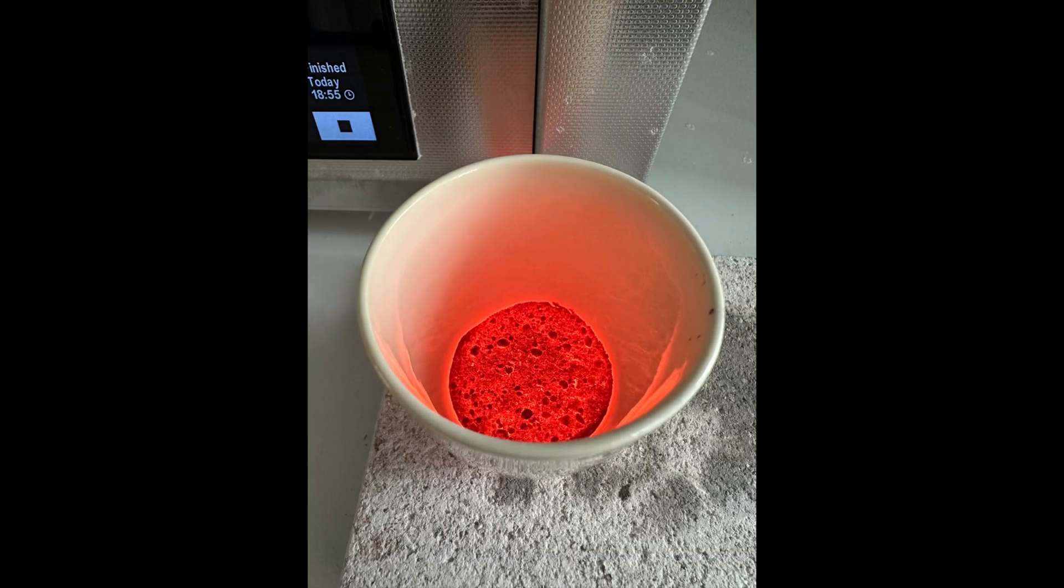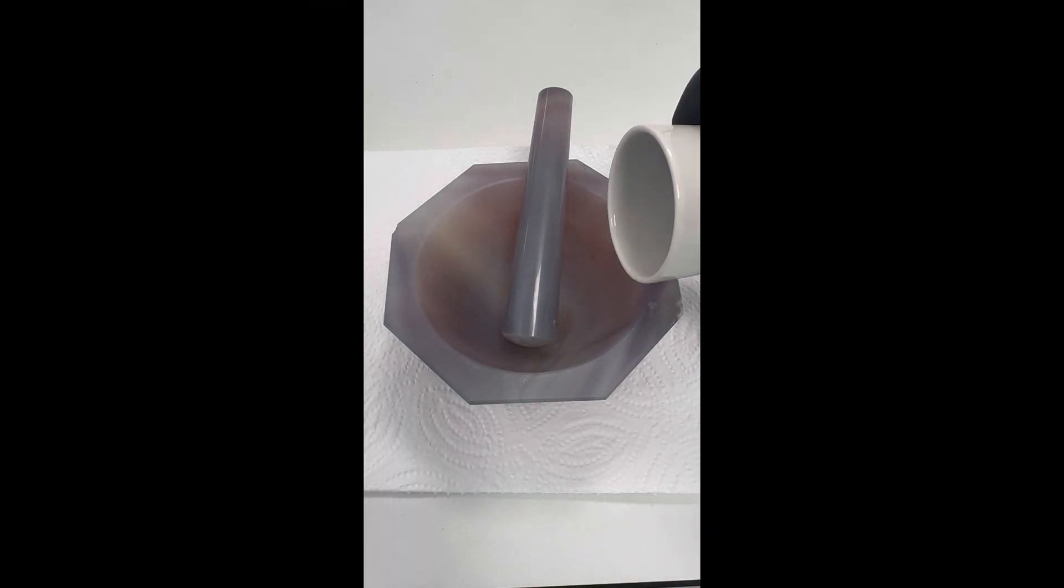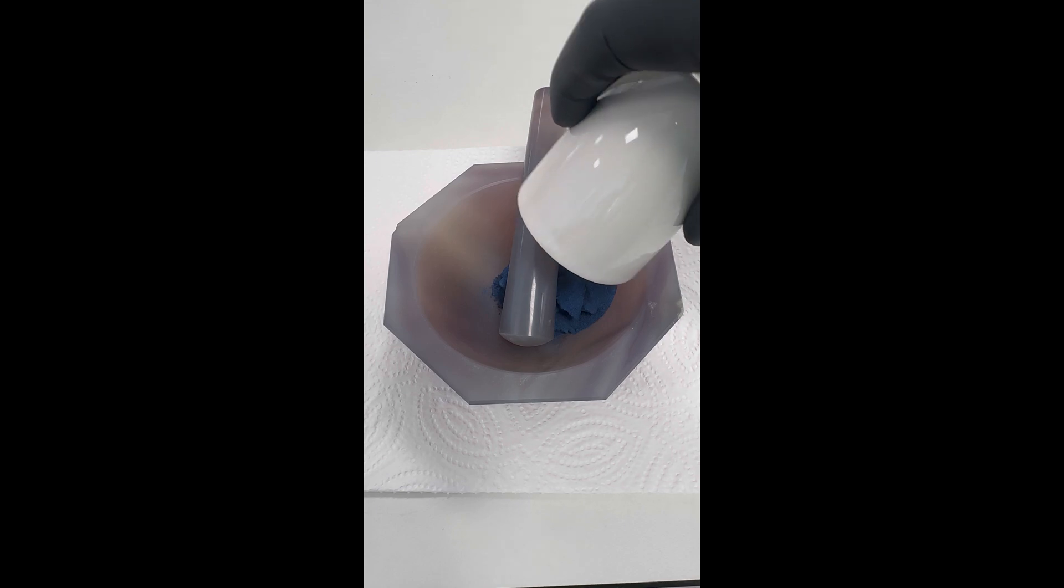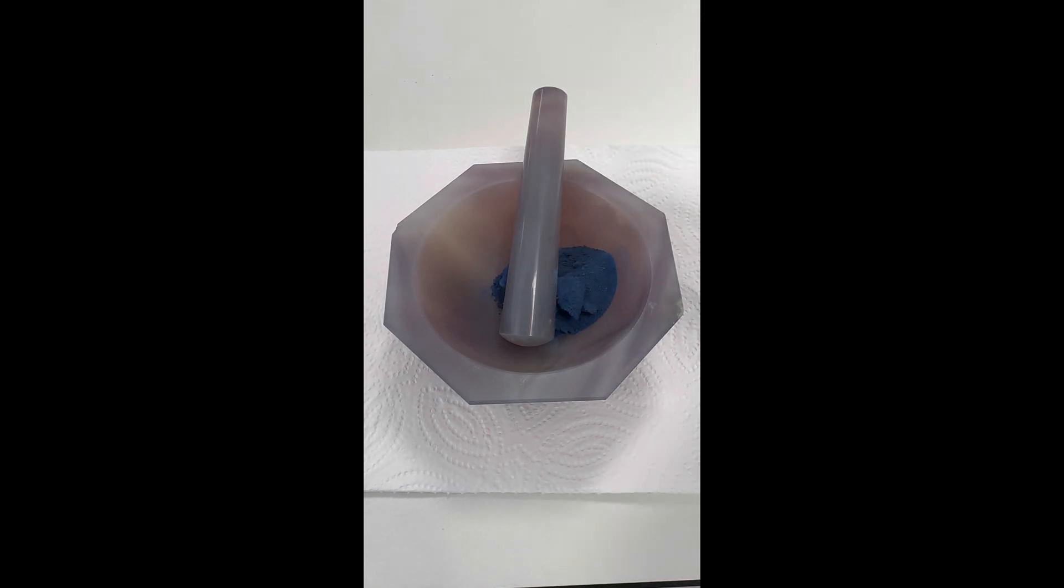After sintering, the mixture is allowed to cool to room temperature. The formed pigment is transferred to an agate mortar and ground into a fine powder.